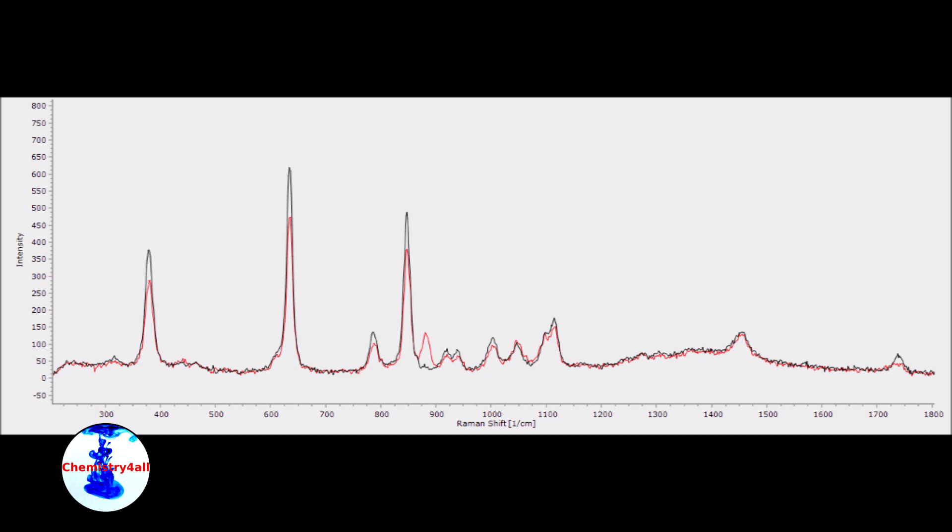And finally, here we have a comparison of the Raman spectrum of our product, shown in red, and the Raman spectrum of pure ethyl acetate, shown in black. As we can see, they are almost in perfect agreement with each other, and therefore, we can conclude that we have finally obtained a nearly pure sample of ethyl acetate.